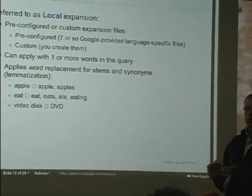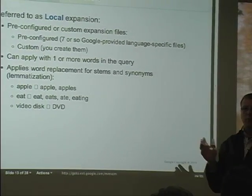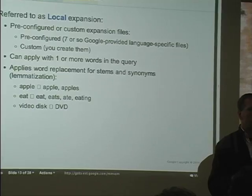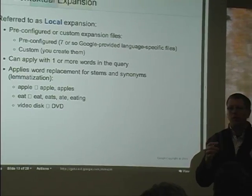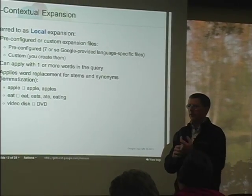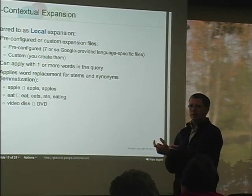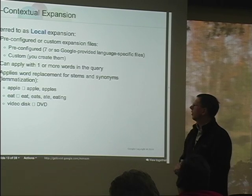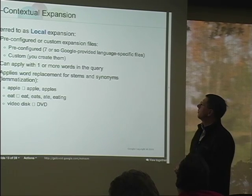What you'll find is they are simple replacement lists. For example: apple, apples; run, ran, running - various different stems. These are generic word form expansions covering singular and plural forms as well as common verb conjugations.